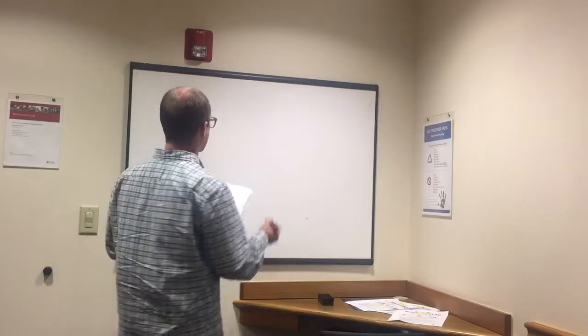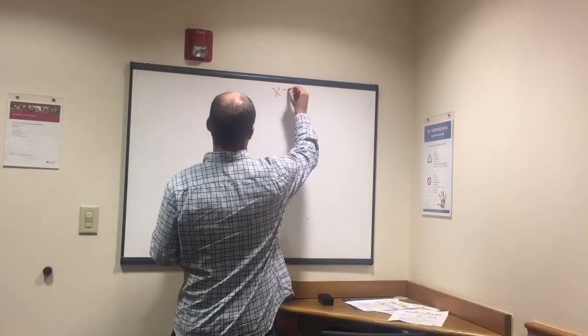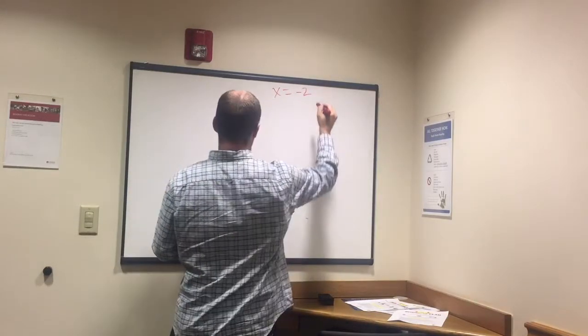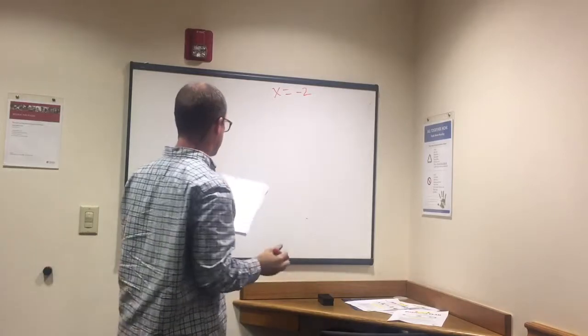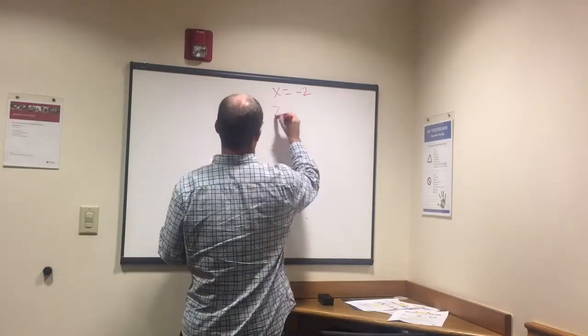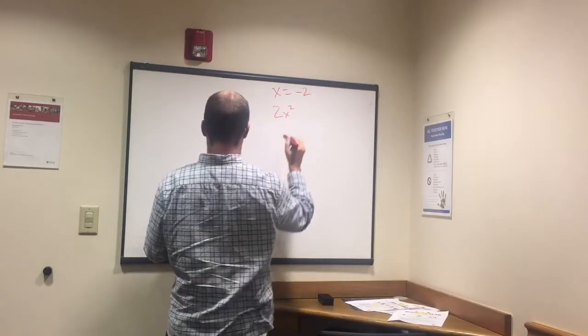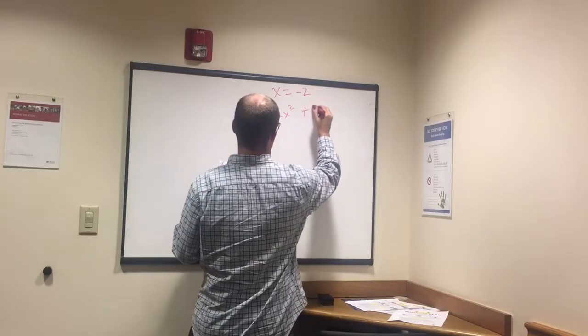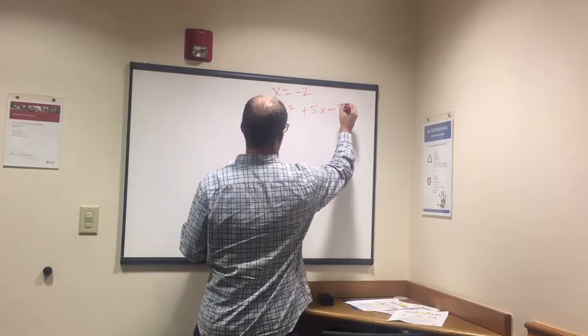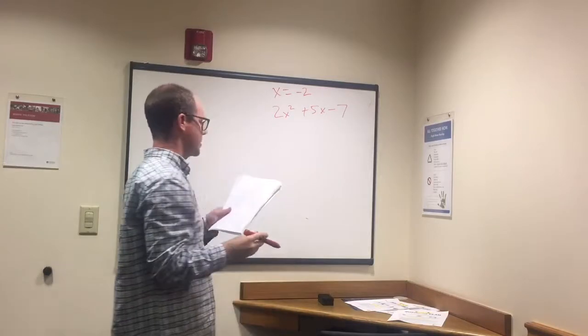Okay, so first is a plug-in type question. So we have x equals negative 2, and then they ask you what is 2x squared plus 5x minus 7.